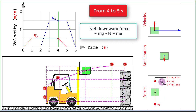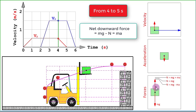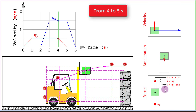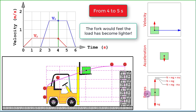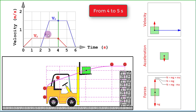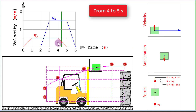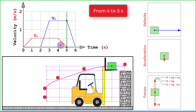For a net downward force, the normal reaction must be less than the weight — it has reduced a little bit. To the fork, the block will now appear to be slightly lighter than before because the normal reaction is reduced. This acceleration is opposite to the direction of the upward velocity, so it will reduce the magnitude of velocity until it becomes zero — meaning the upward motion of the block has completely ceased.